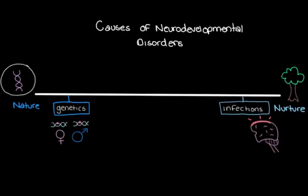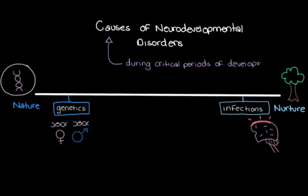You might be thinking: if she had meningitis, and infections like meningitis can cause neurodevelopmental disorders, does that mean she has a neurodevelopmental disorder? That's a really important point. All of these events, in order to result in a neurodevelopmental disorder, need to occur during the critical periods of development — while the fetus is developing during pregnancy, during the birthing process, or shortly after birth, within the first few months to years of life.